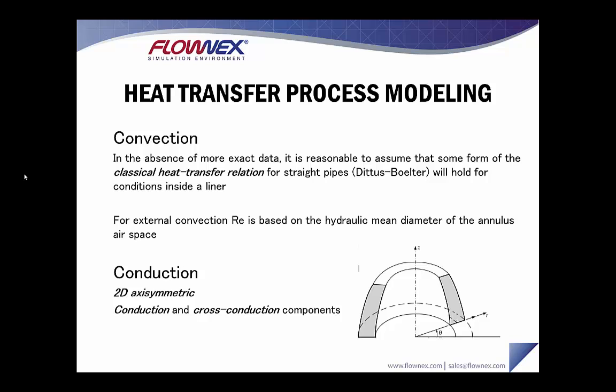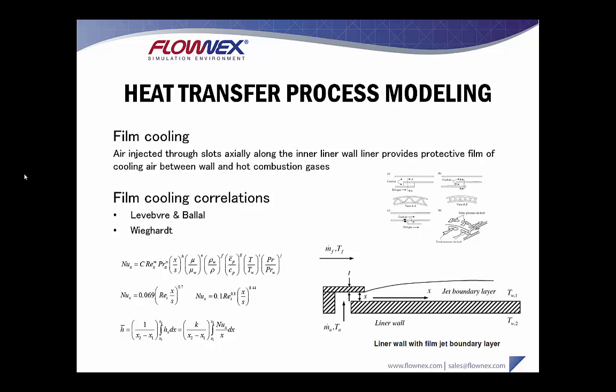With regards to convection, it's typically reasonable to assume that some form of the classical heat transfer relation for straight pipes will hold for conditions inside a liner. For external convection, the Reynolds number is based on the hydraulic mean diameter of the annular air space. Flownex also allows you to create a 2D axisymmetric representation of your conduction surfaces and model conduction and cross-conduction through those surfaces.